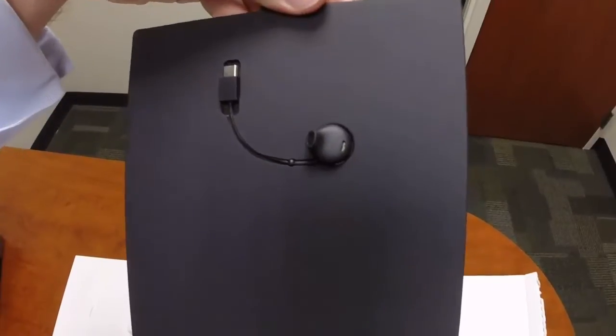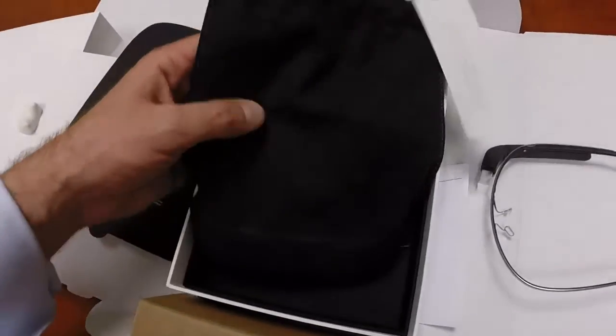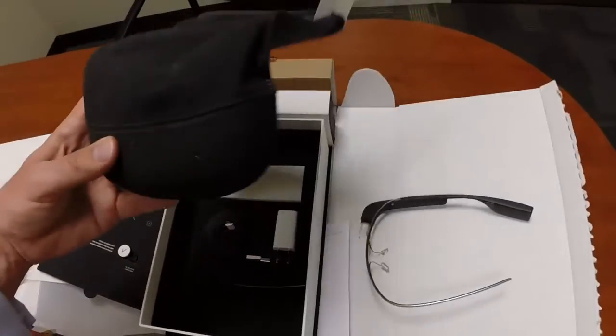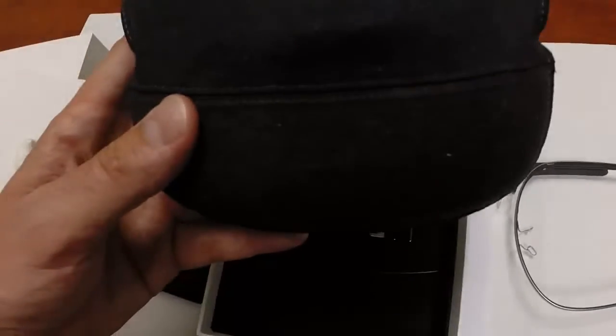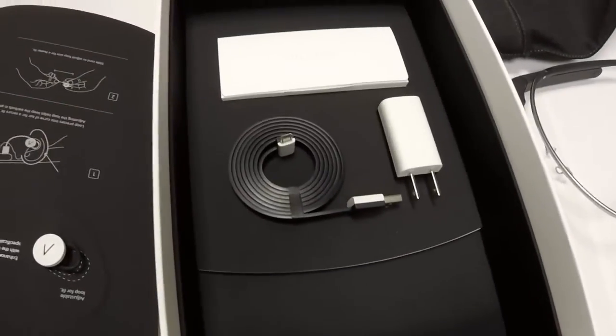This is the USB, micro USB to actually fit into it on the side and the earbud itself. This is a pouch. It's very soft, except for the bottom. The bottom is hard, which makes sense to protect the actual glass itself. Put that off to the side. And there's three last items in here.